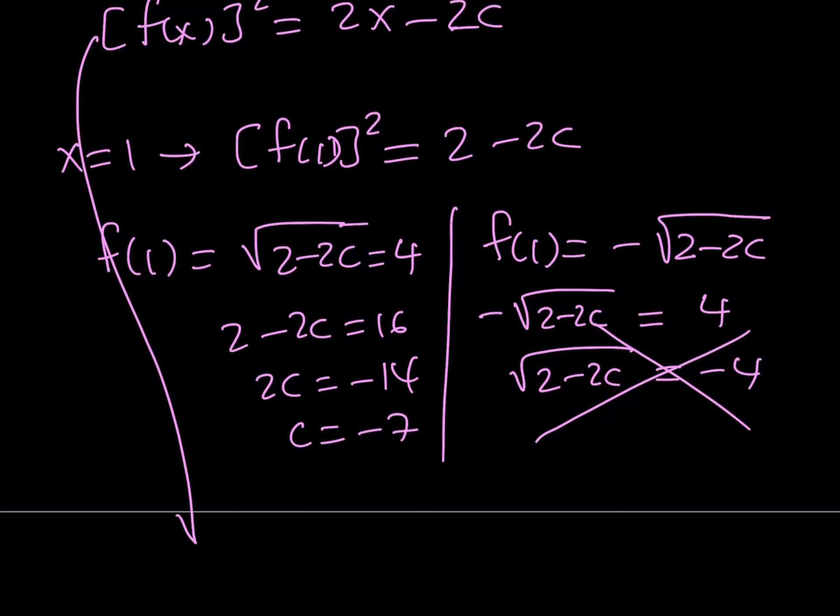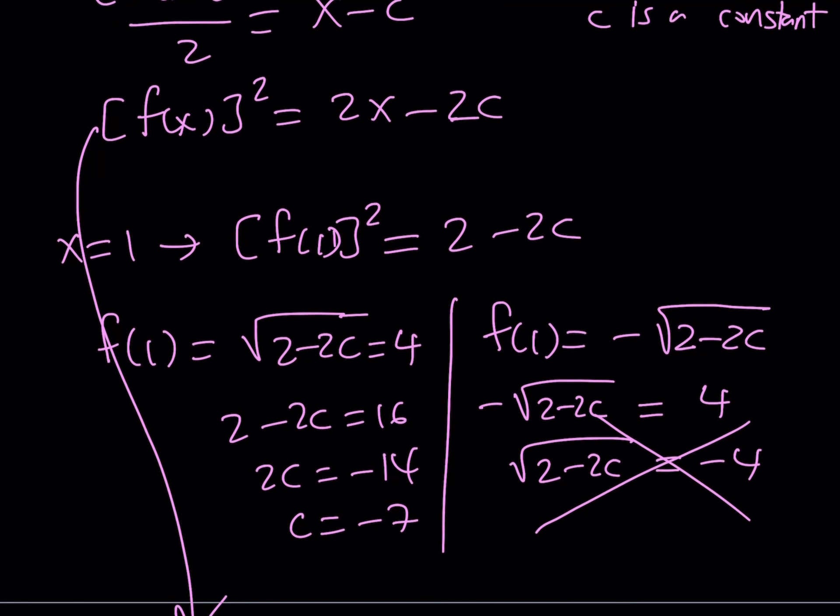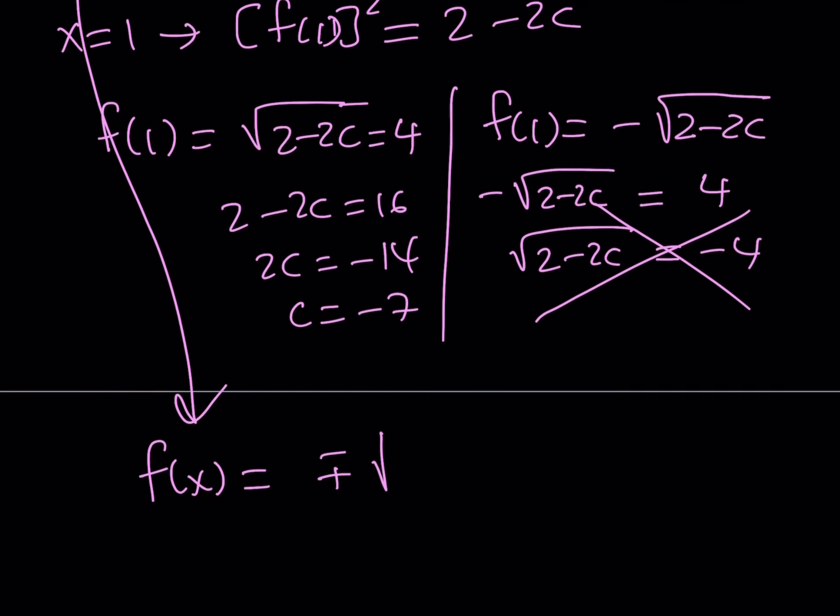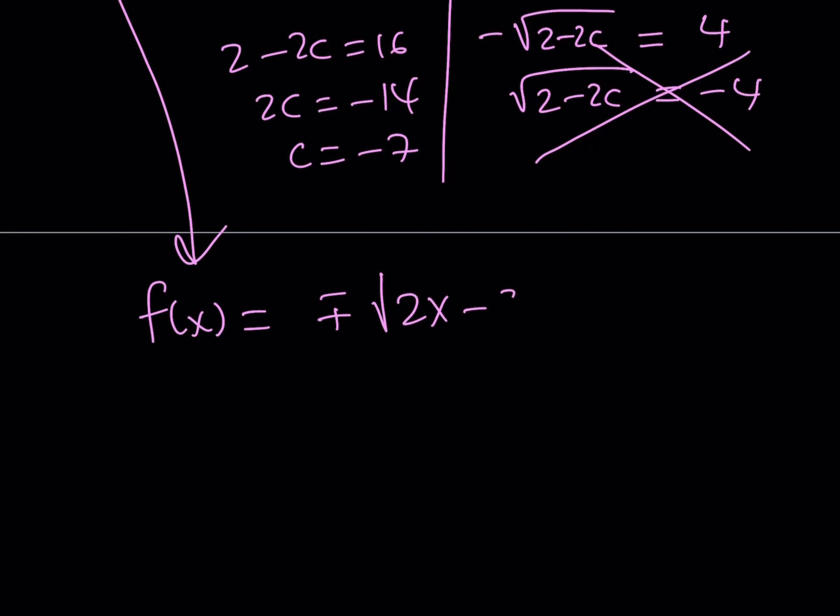So if you go back here to the equation f of x squared, let's go ahead and write it this way. f of x can be written as plus or minus the square root of 2x minus 2c. We notice that the minus sign is not going to apply. So f of x can be written with a positive sign, and c is equal to negative 7.